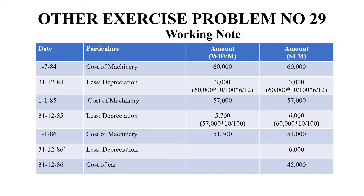Now, on this date they are changing the method. Already you have followed the return on value method. Now in this new method, you will calculate the straight line method. In this method, the value is higher. So what do you do? The balance amount is added to the other side. If you have to change the value method, you will go to the other side. And in this method, you follow the straight line method. The original cost is Rs. 6,000 depreciation.